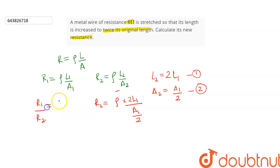The ρ terms cancel out and we are left with R₁/R₂ = (L₁/A₁) × (A₁/4L₁). On further simplifying, we get R₁/R₂ equals...